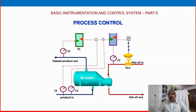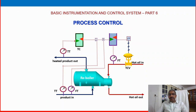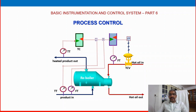In this 6th video session for basic instrumentation, we are discussing about process control. We have studied in previous videos about the measuring element or primary element — we studied about level, pressure, flow, and temperature: what is the definition, what is the basic unit, and how we can measure from an operating field or process plant, how we can measure the process variable.